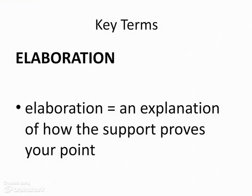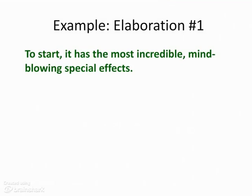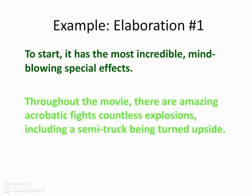The next term is an elaboration. An elaboration is an explanation of how the support proves your point. So first you give a support, which is your main fact, then you have to explain how that fact proves your point. So remember, the support was about the mind-blowing special effects. Here's the elaboration: "Throughout the movie, there are amazing acrobatic fights, countless explosions, including a semi-truck being turned upside down." I've now given you an example and explained that support. That's what an elaboration is — it explains more and gives specific examples.